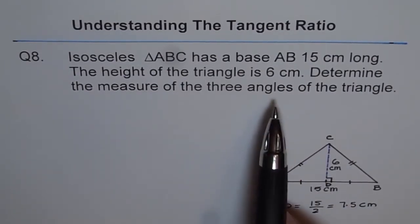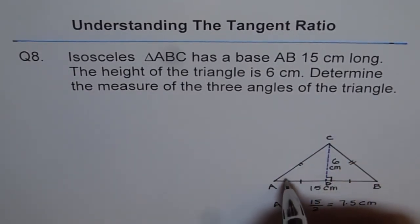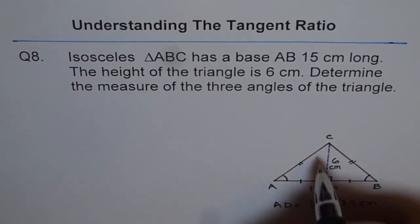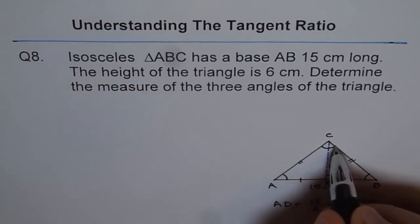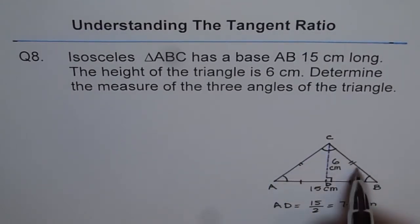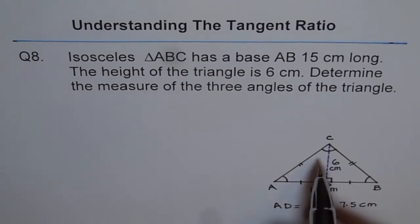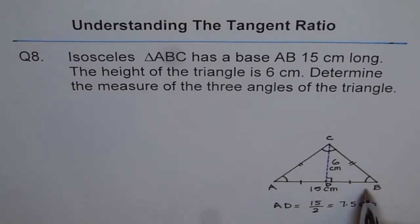Now, we need to find the three angles of the triangle. That means angle A, angle B, and angle C. Now, since this is an isosceles triangle, angle A is going to be equal to angle B, right? And angle C will be 180 minus angle A minus angle B. So that is how we are going to solve for all the three angles.